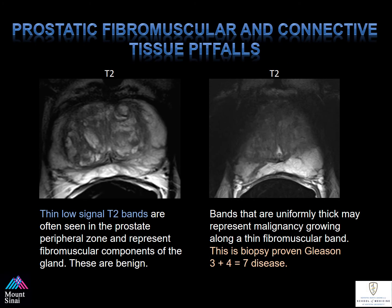Prostatic fibromuscular and connective tissue pitfalls when evaluating prostate MRI. Take a look at the T2-weighted images presented. On the right, there are thick bands that can represent malignancy — they are enhancing and restricted, and biopsy revealed Gleason 3+4 disease. However, on the other screen, notice these thin, low-signal bands that are often seen within the prostate peripheral zone and represent fibromuscular components, which are benign. Take a moment to look at the difference between the two T2-weighted sequences.